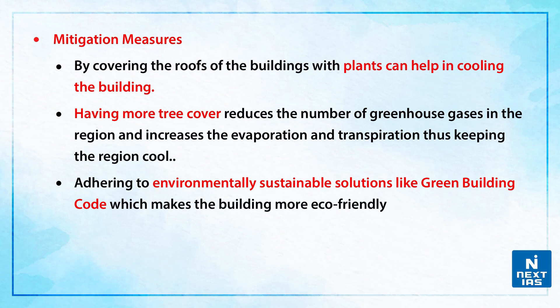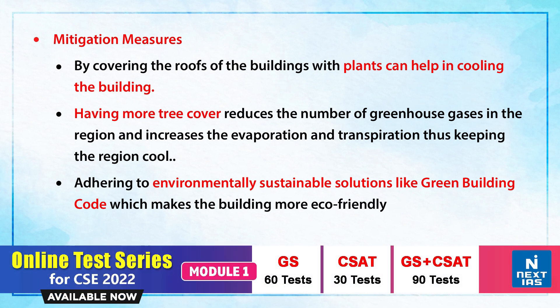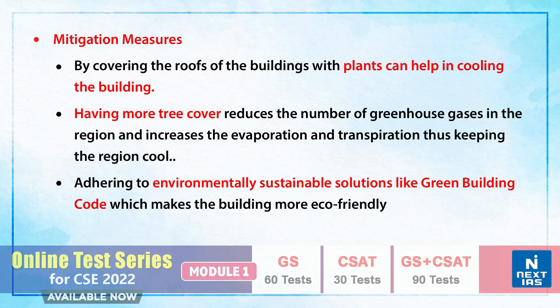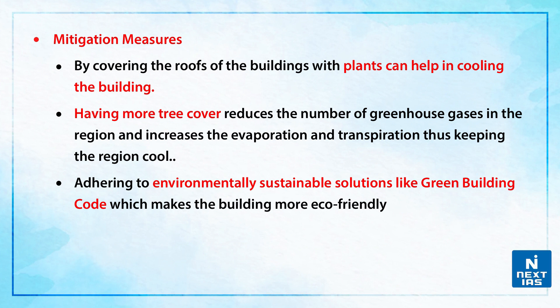If we talk about the mitigation measures: first of all, covering the roofs of buildings with plants can help in cooling the building. Secondly, having more tree cover reduces the number of greenhouse gases in the region and increases evaporation and transpiration, thus keeping the region cool. Also, we have to adhere to environmentally sustainable solutions like green building codes, which make the building more eco-friendly.